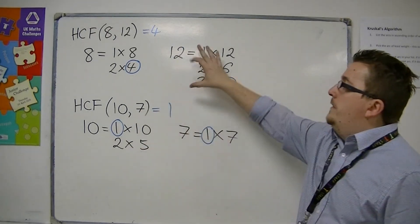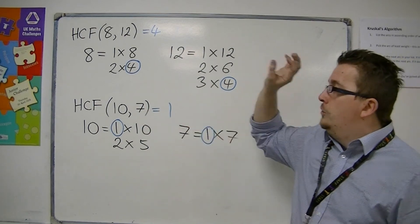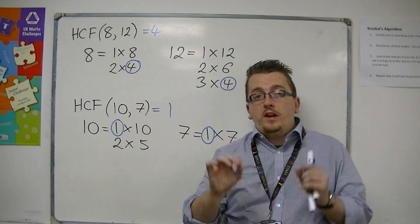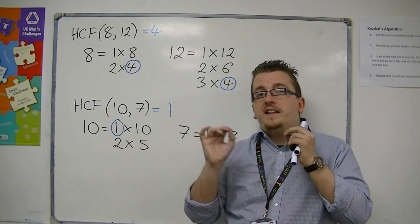This is how you calculate the highest common factor. Write down the factors of both numbers and identify which is the largest that is in both lists.